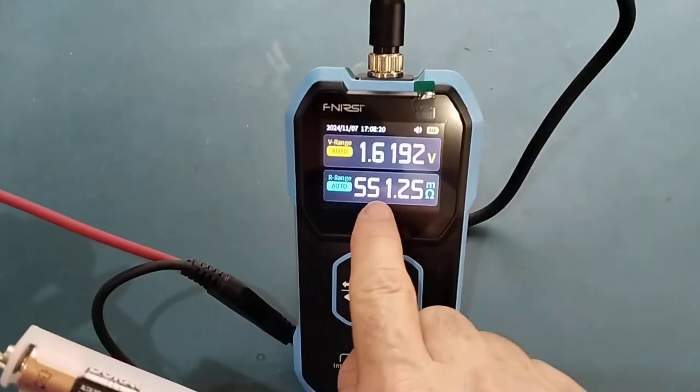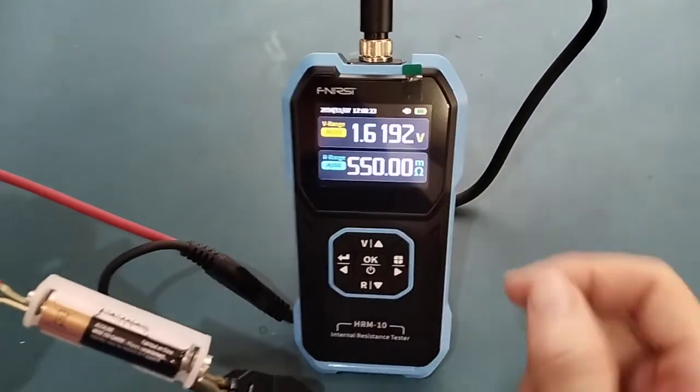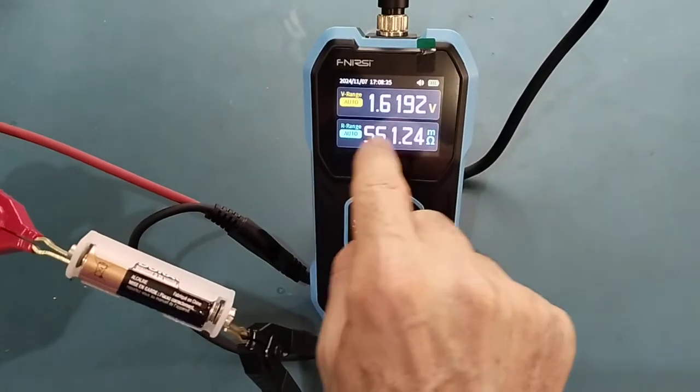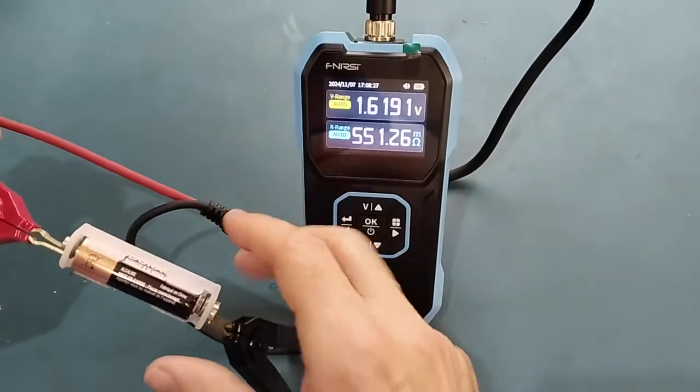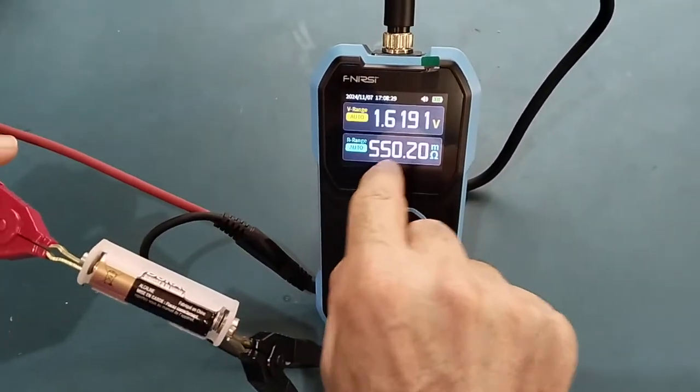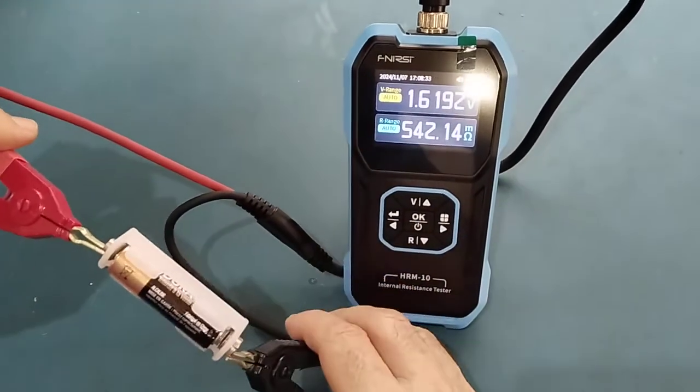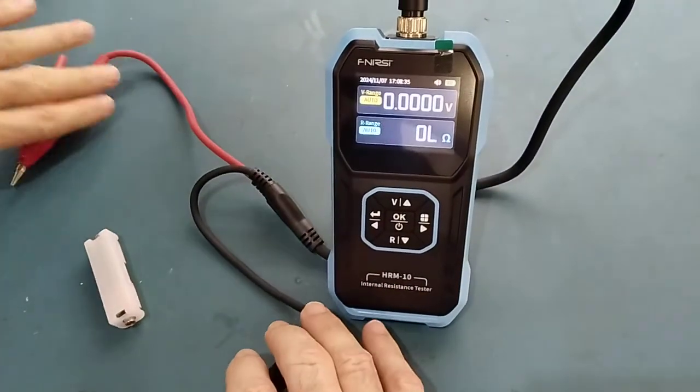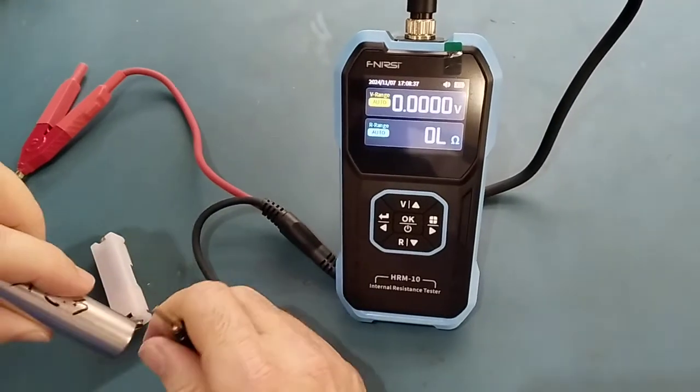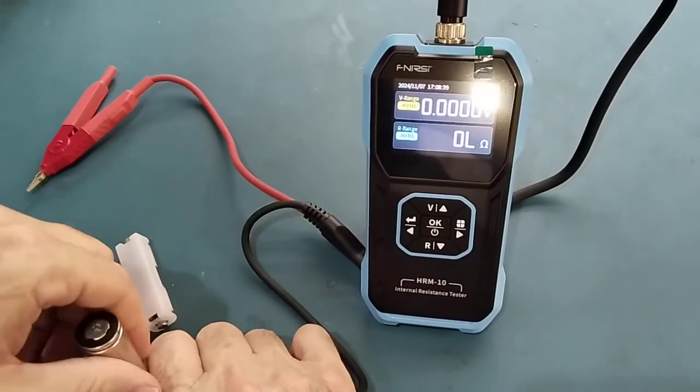It measures the internal resistance and voltage of the battery. This battery is kind of old but still okay. Internal resistance in the tens of milliohms is much better. Here I've got a lithium-ion 18650